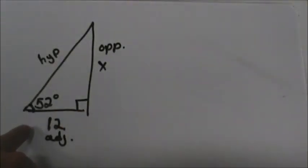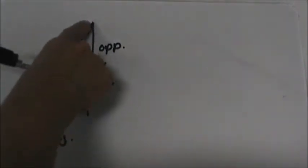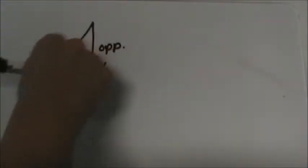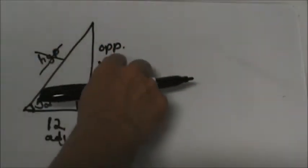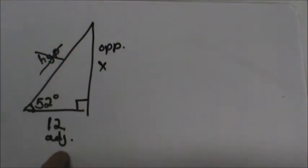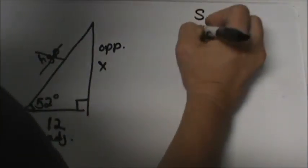Which two sides are we using? Well, there's no marking, there's no length, and our x is not on the hypotenuse, so we're not going to use the hypotenuse. We're going to use the opposite side and the adjacent side.